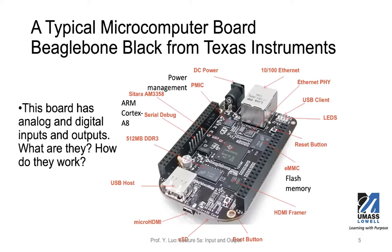This is an example of a microcomputer board that has been very famous for quite a while — it's called a BeagleBone, specifically BeagleBone Black. This is a powerful little microcomputer board with a processor from Texas Instruments. On this board you can find many different input and output devices and connections. In the center you can see a microprocessor — this is the ARM-based TI microprocessor — and around it there are many different components.